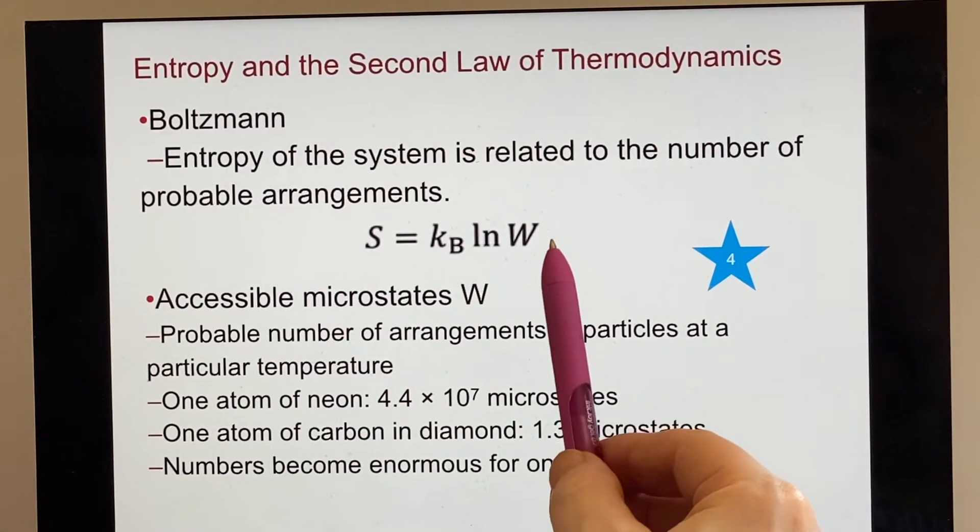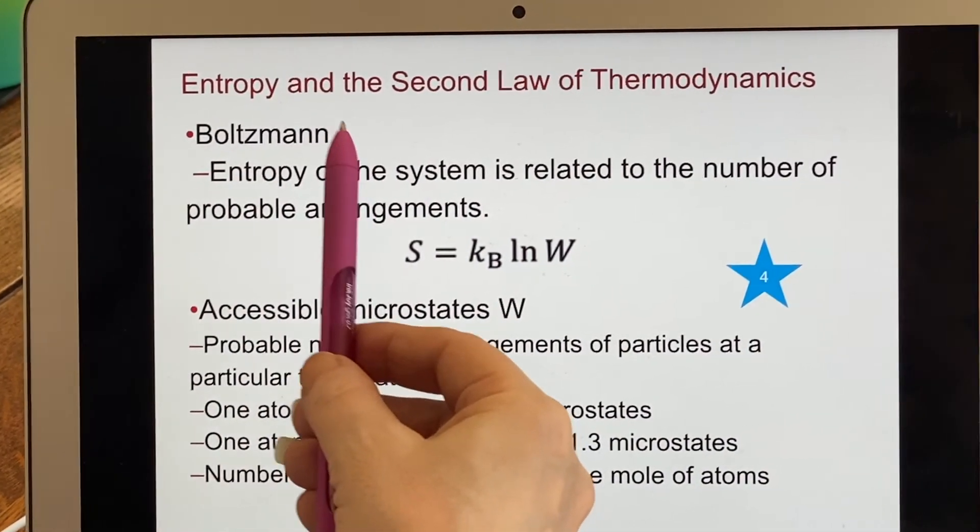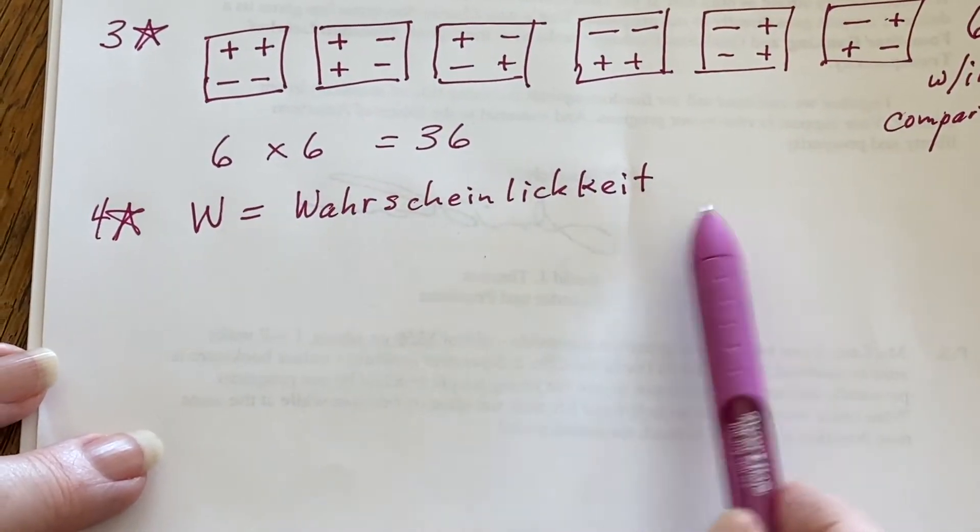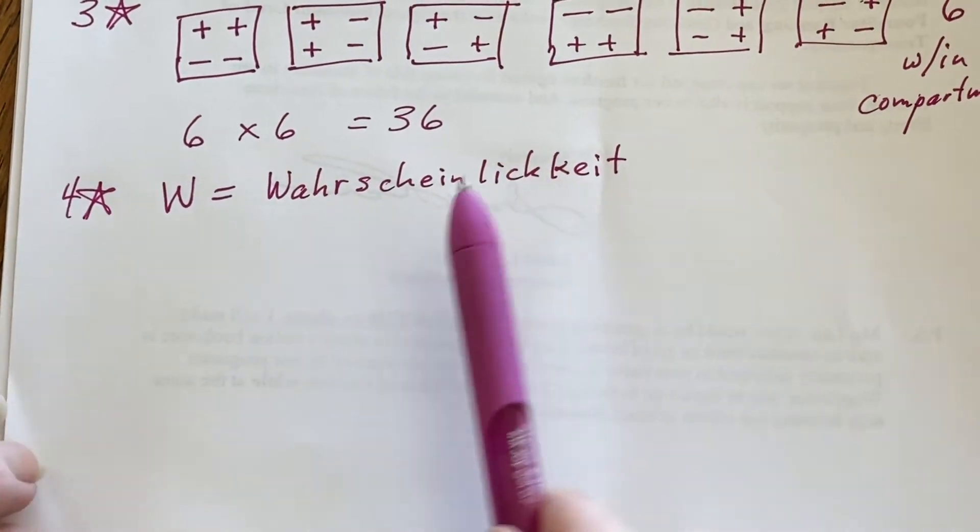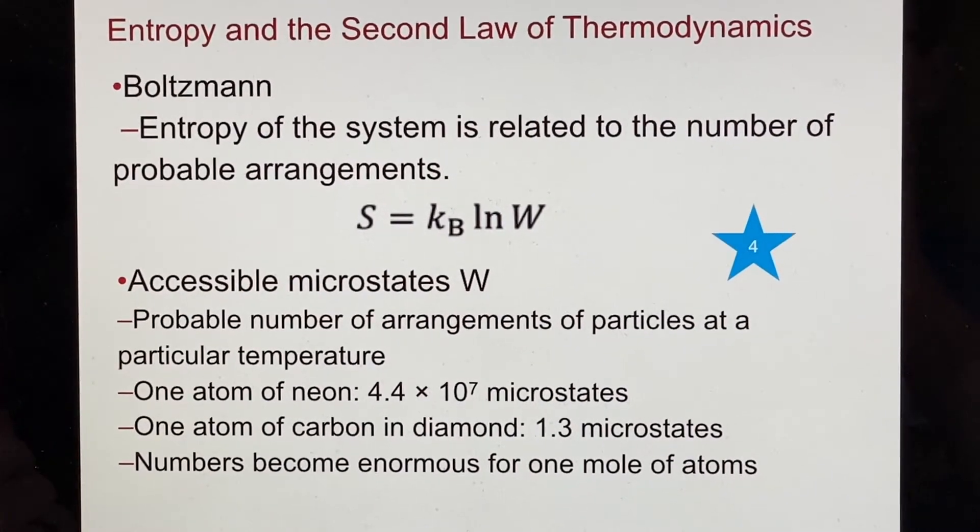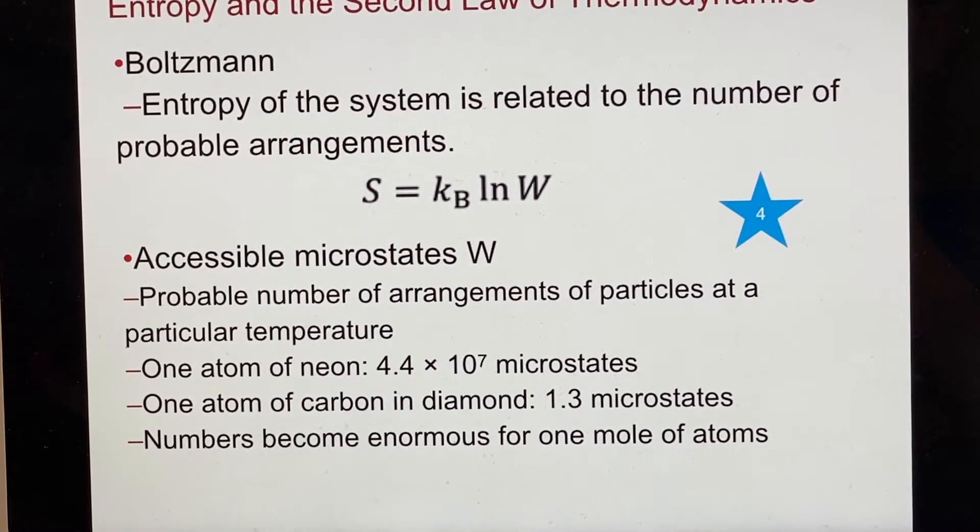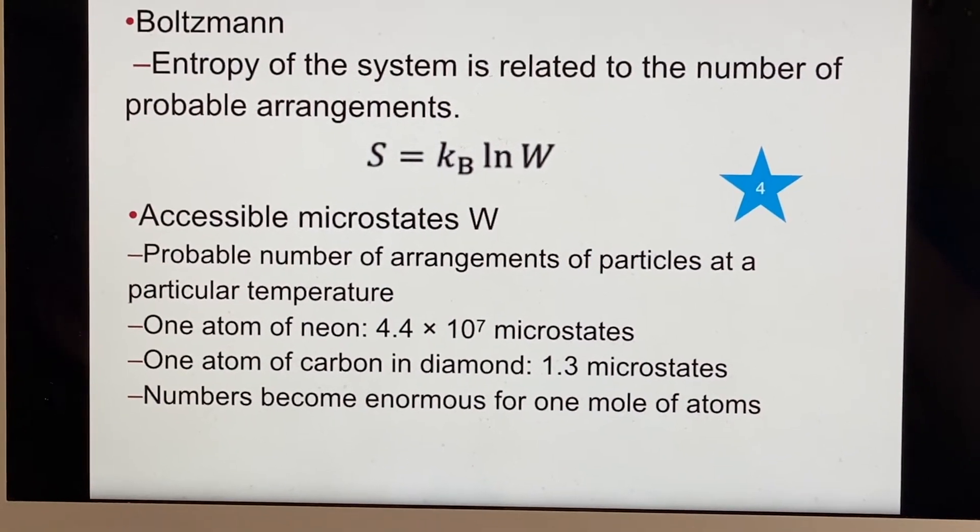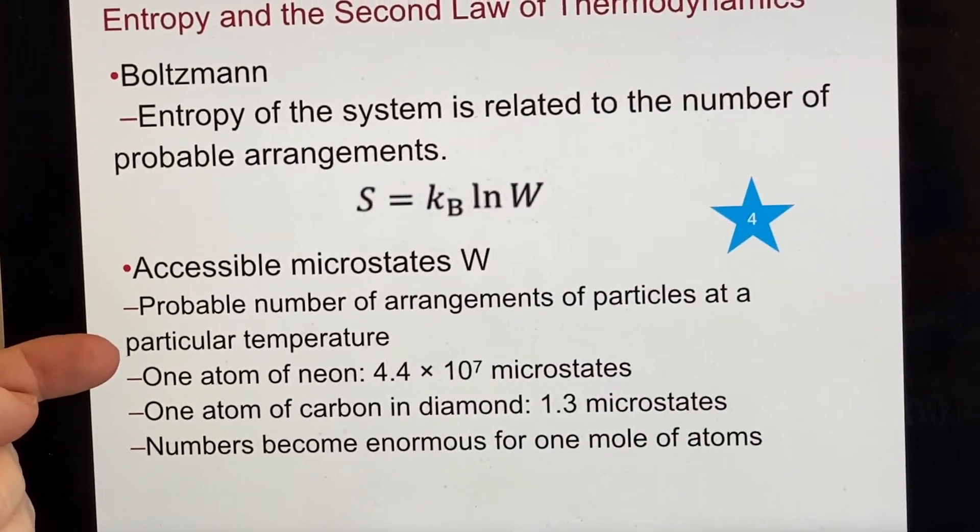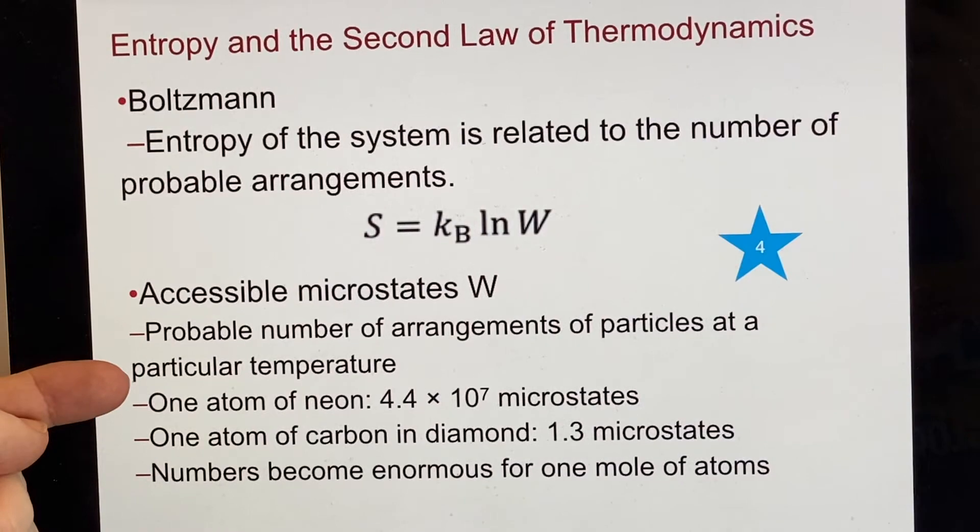Why is it W? Well, because Boltzmann was German. W stands for the German word wahrscheinlichkeit. So this is likelihood, probability. He's counting the number of possibilities. Accessible microstates is what we like to call these. But when we talk about possibilities, then of course we also end up talking about probabilities. So this is probable number of arrangements of particles at a particular temperature. So this W, that's what that stands for, the microstates.